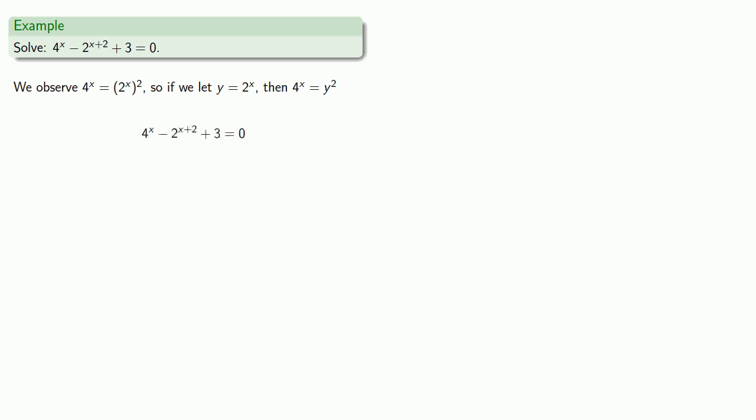So if we apply the rules of exponents, this 2 to the power x plus 2 is the same as 2 to the second times 2 to the x. And so there is a 2 to the power x in our equation. So now making that replacement is worthwhile.